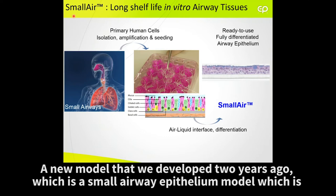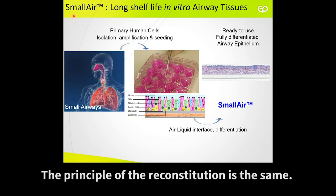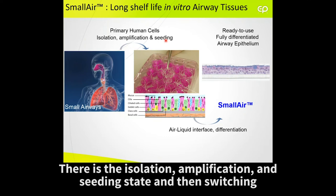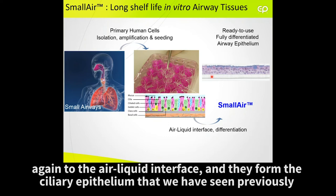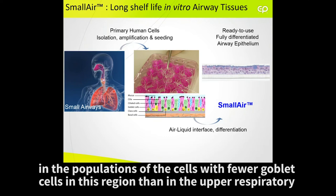New models that we have developed two years ago — the small airway epithelium model — are also made on primary human cells isolated from the bronchial regions. The principle of the reconstitution is the same: isolation, amplification, and seeding, then switching again to the adequate interface. They form a similar epithelium to what we have seen previously with the upper respiratory tract. But more importantly, here in vivo there is a switch in cell populations, with fewer goblet cells in these regions than in the upper respiratory tract.